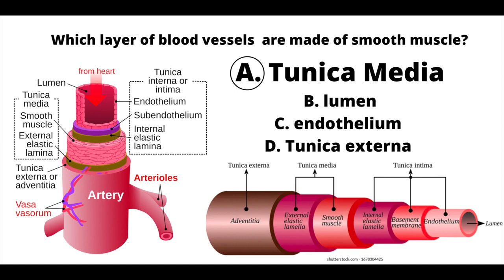Vasodilation means the blood vessel muscles relax and the diameter of the blood vessel gets wider and bigger. Vasoconstriction is when the muscle constricts, gets tighter, and closes up the blood vessel so the diameter becomes smaller.